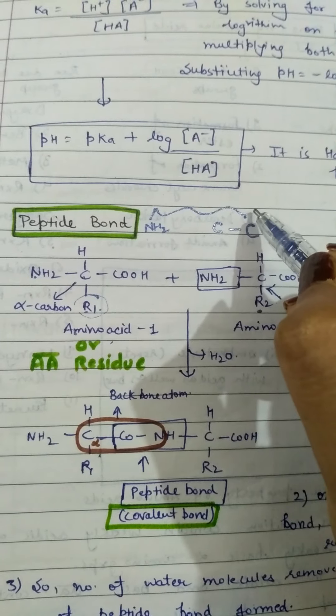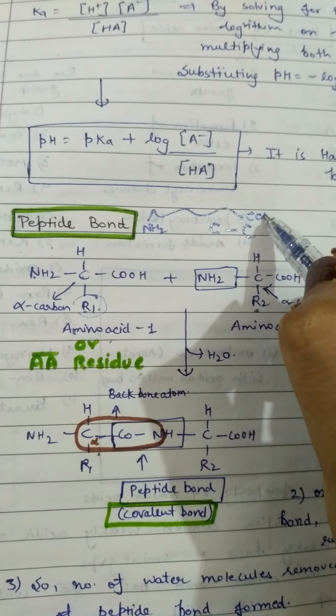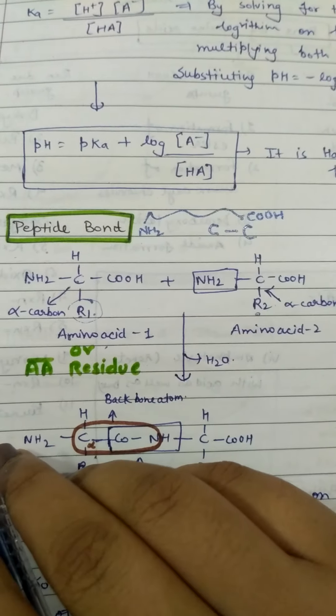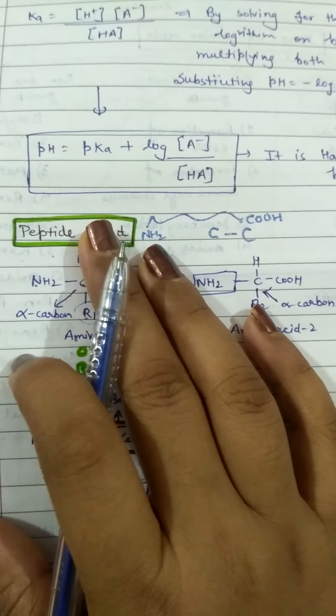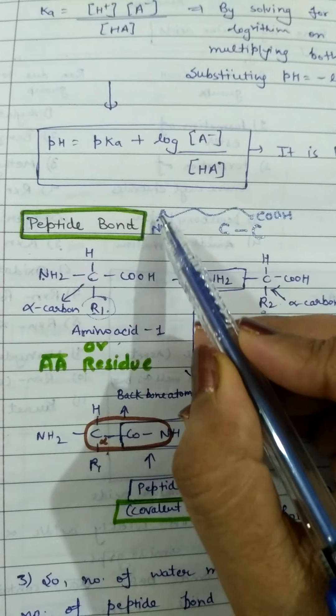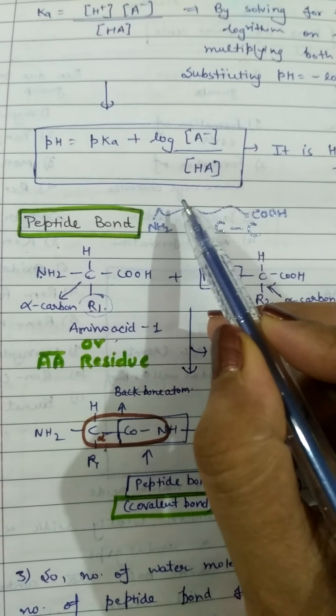The right hand side will be C-terminus because here is carboxyl group. I hope that you understood this. Now look, I will tell you about the peptide bond. You have seen the whole protein and this is the way to make it.